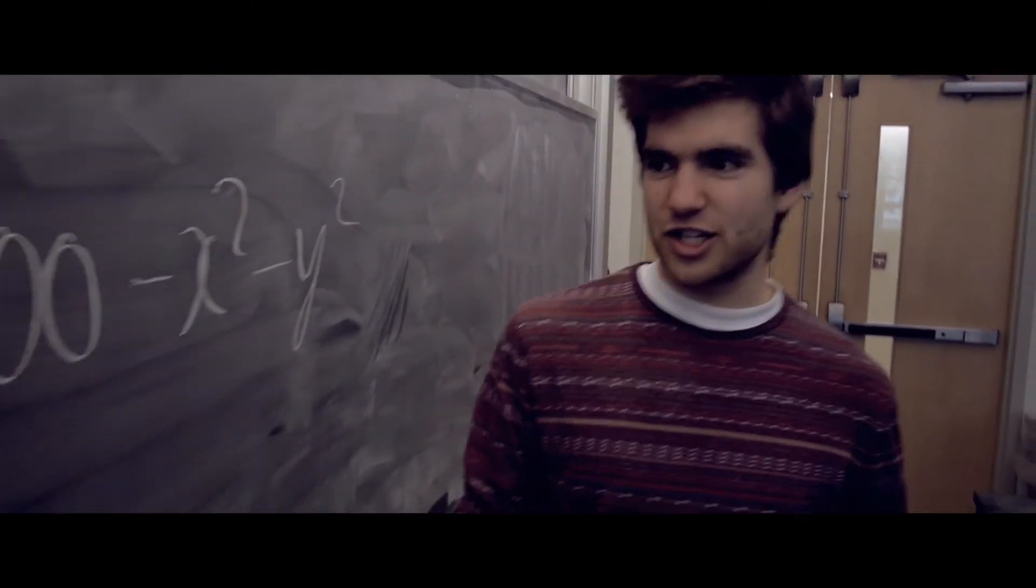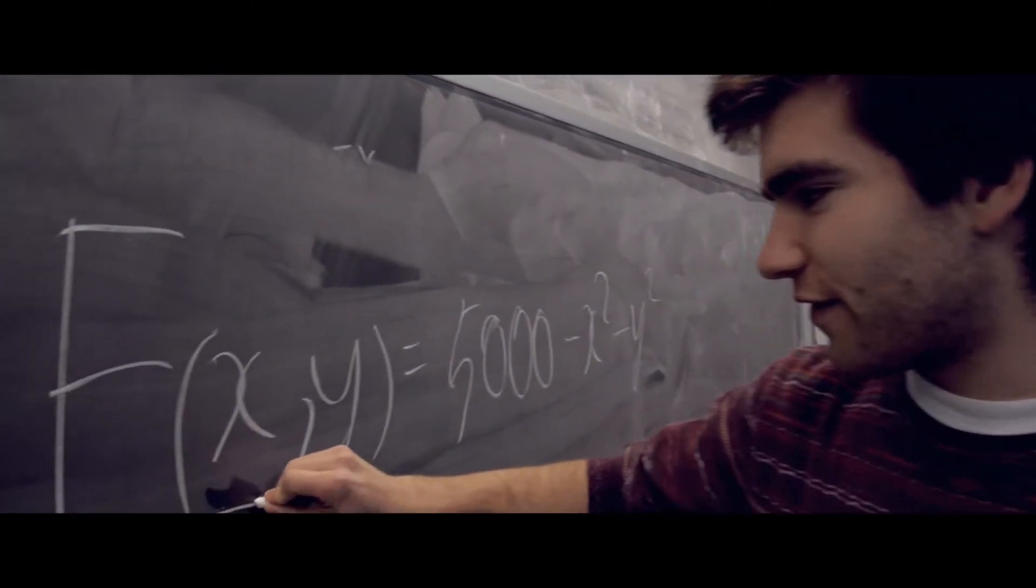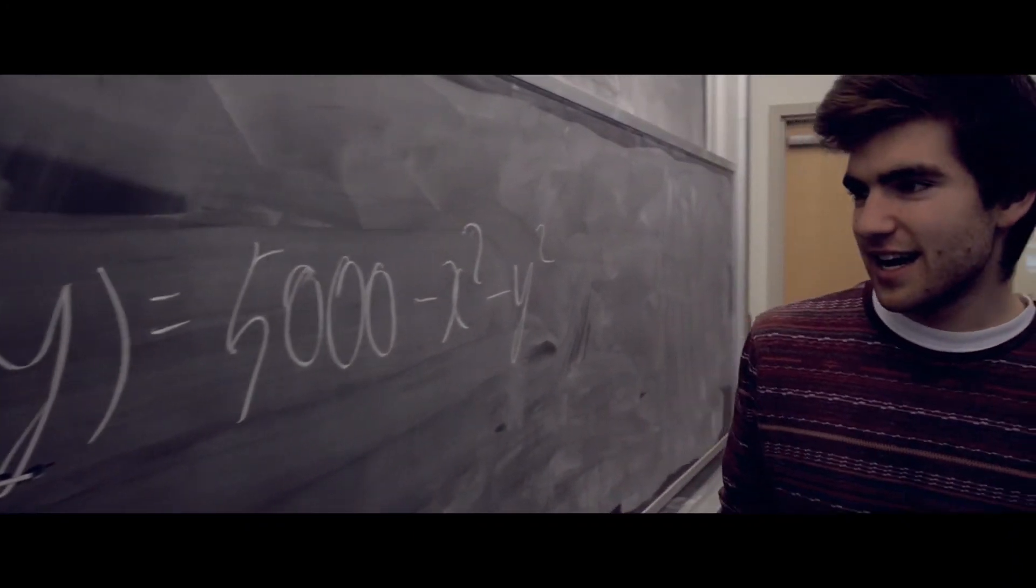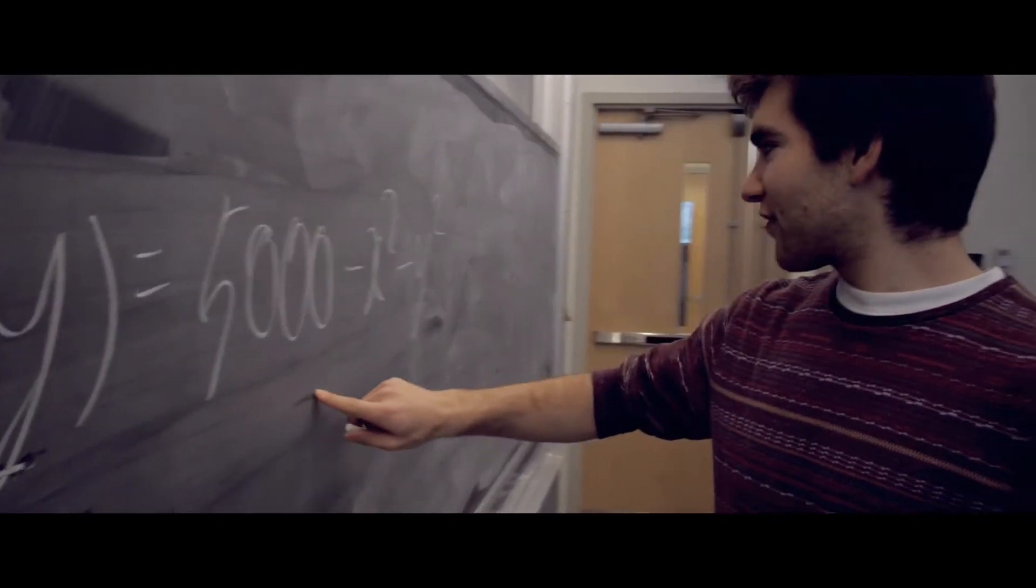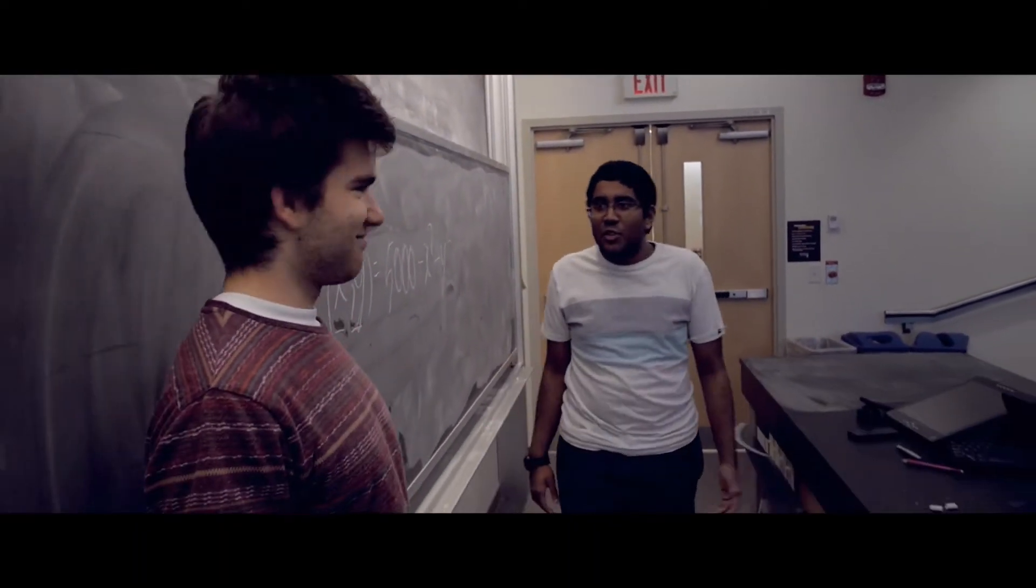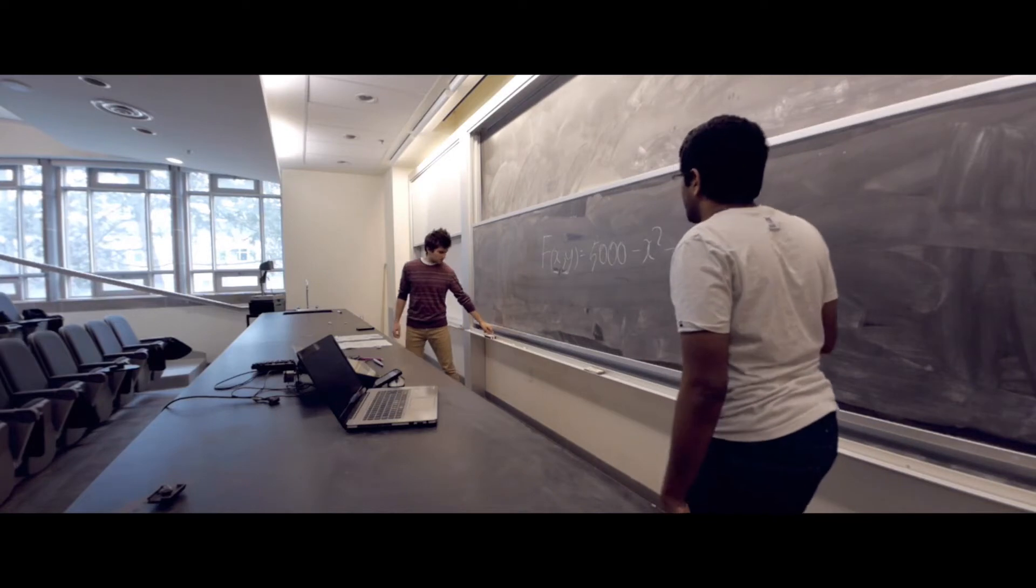I've come up with the hardest math question ever. Not just one variable, two. These students will never be able to understand it. F of xy equals 5,000... No! Not so fast, Riddler! Your days of confusing us with your multiple variables are over.